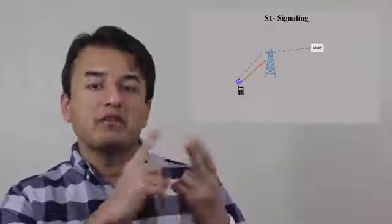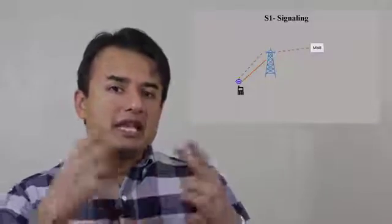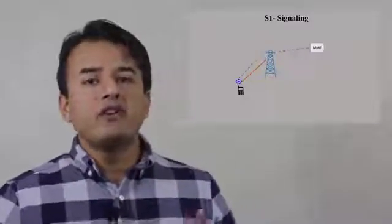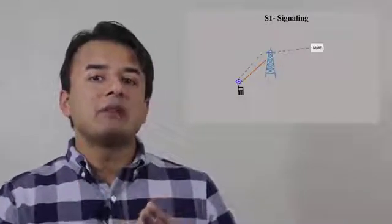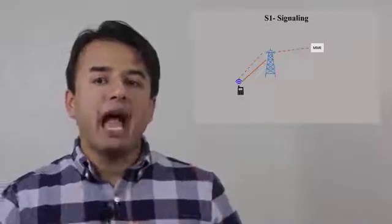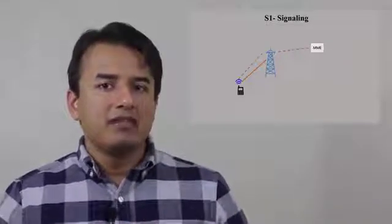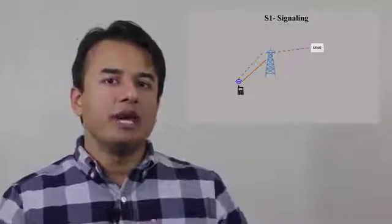This is the phase where eNodeB gets connected with the MME. When I say connected, I mean the signaling establishment between eNodeB and the UE gets established with the perspective of the UE connection.